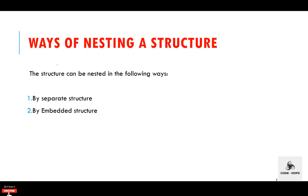Next are the different ways of nesting a structure. The structure can be nested in two ways: the first way is by separate structure, and the second way is by embedded structure. In the case of separate structure, we create two structures, but the dependent structure should be used inside the main structure as a member.